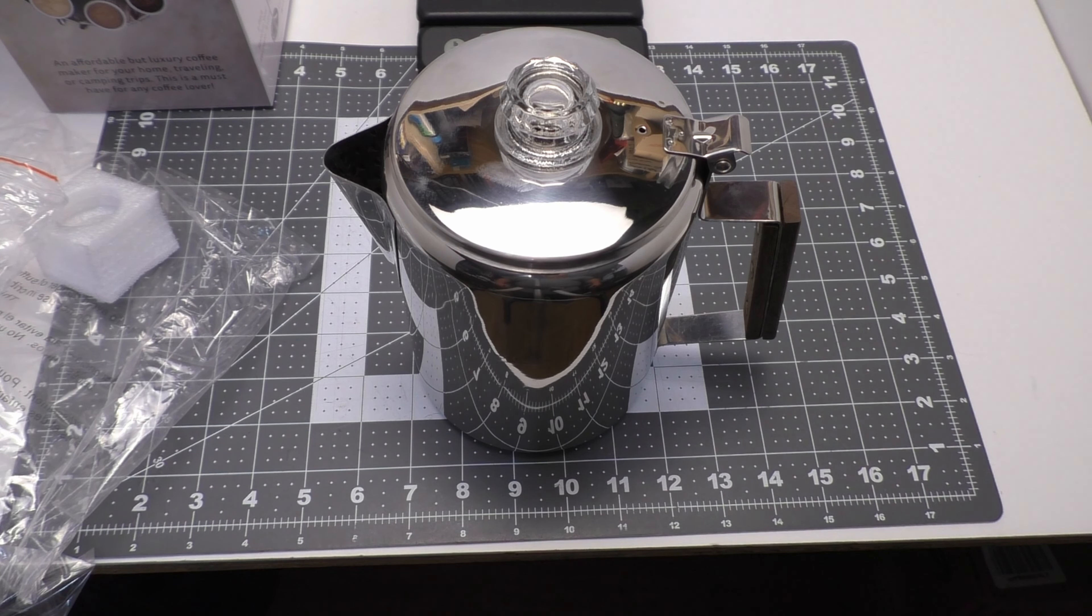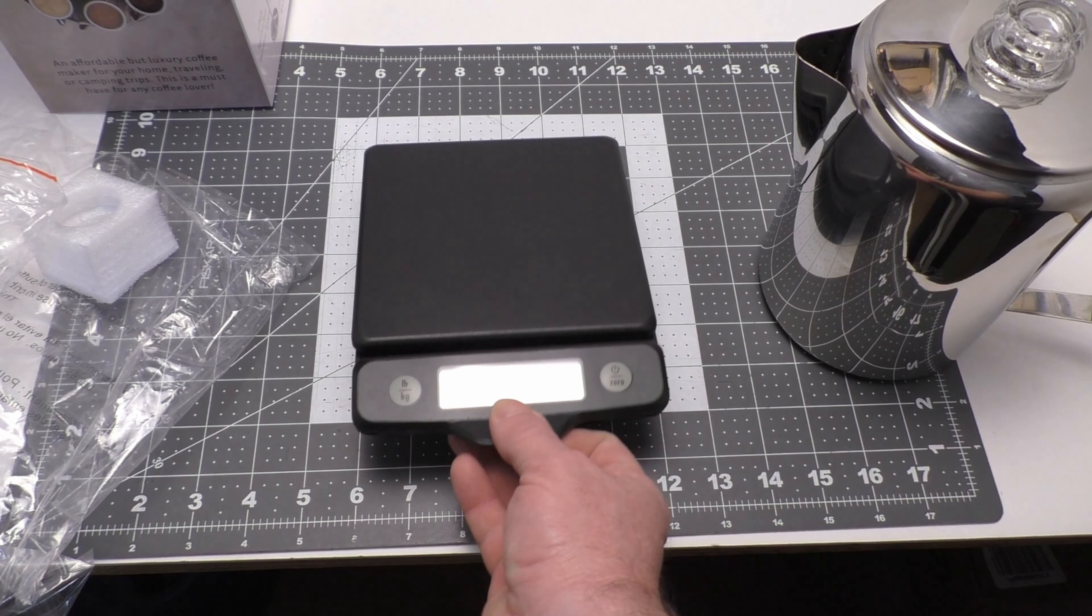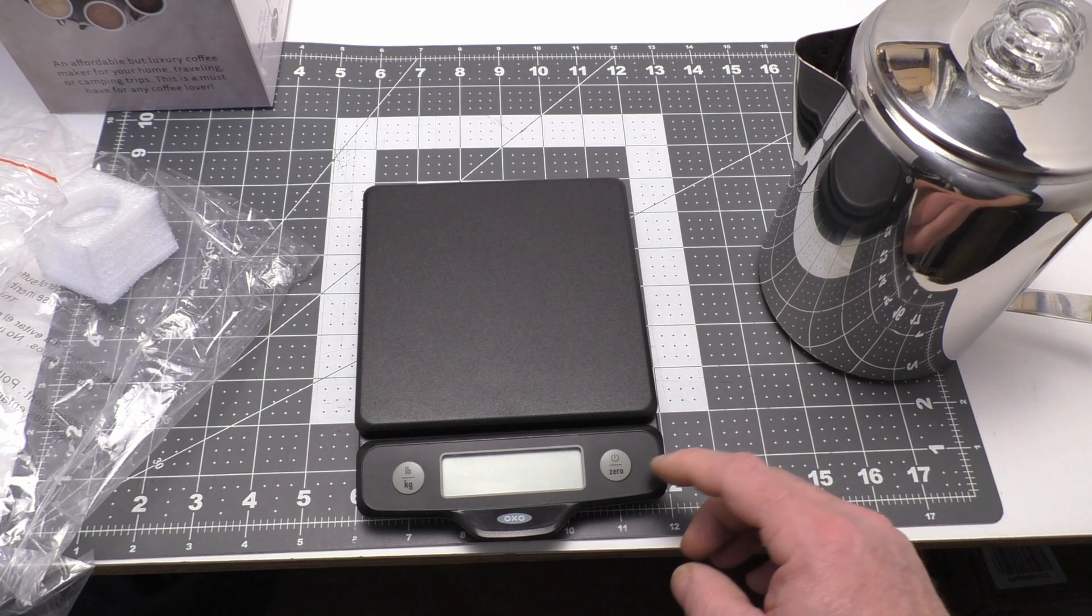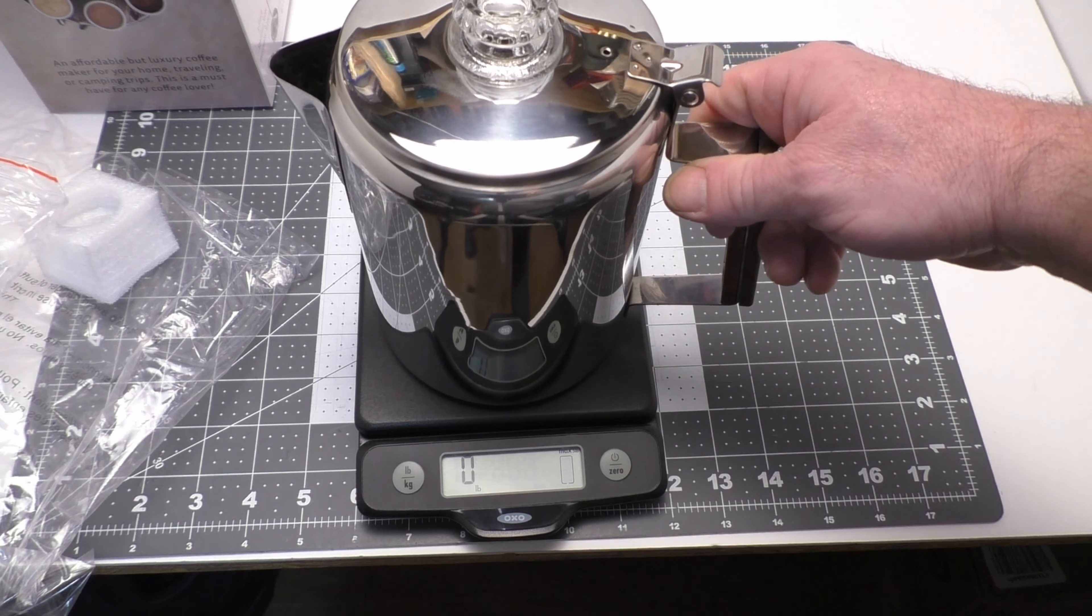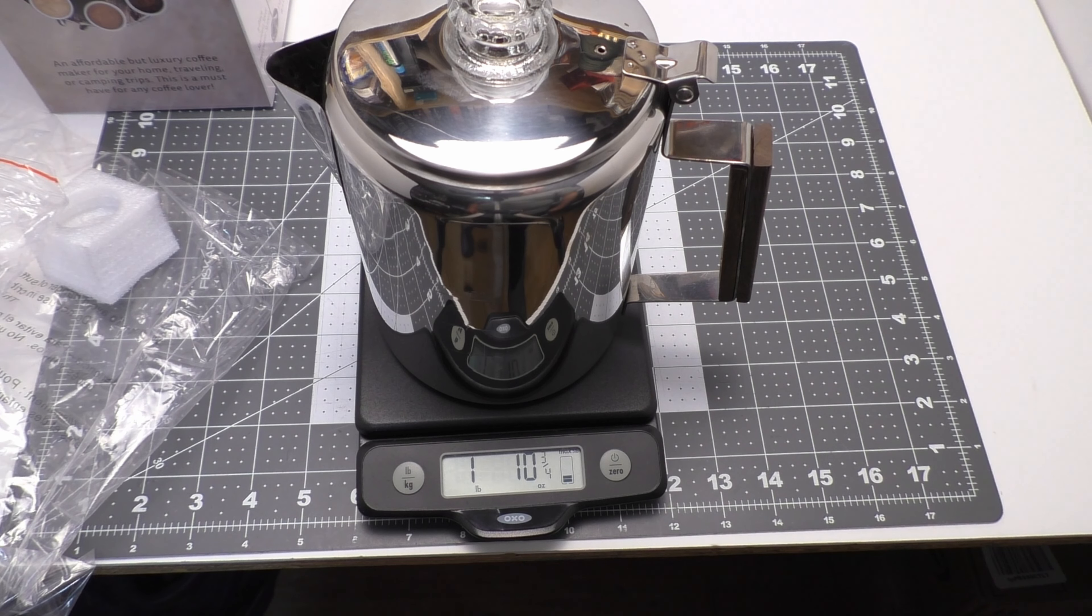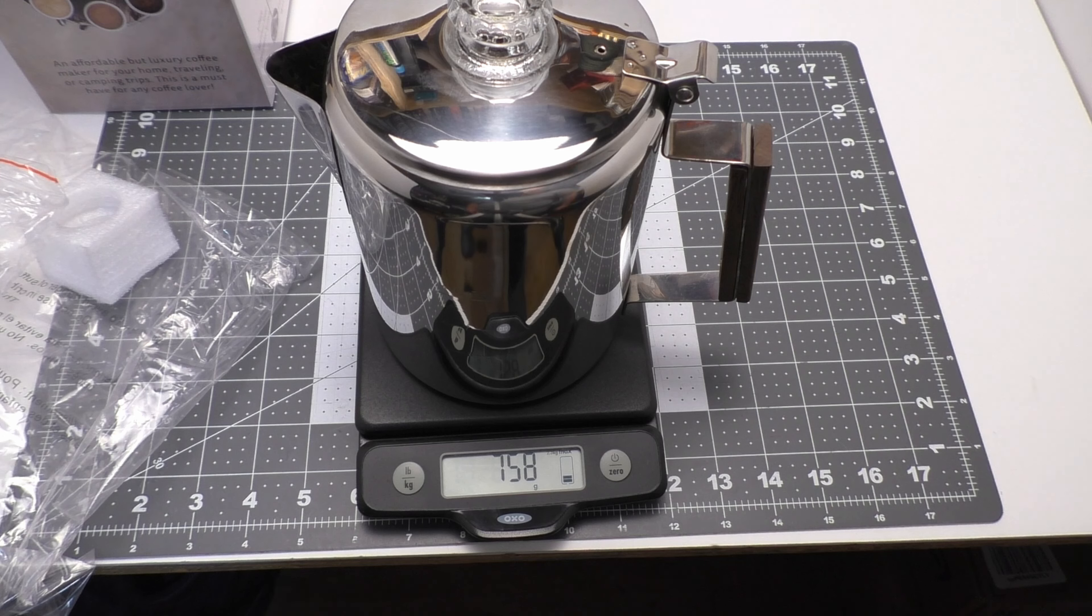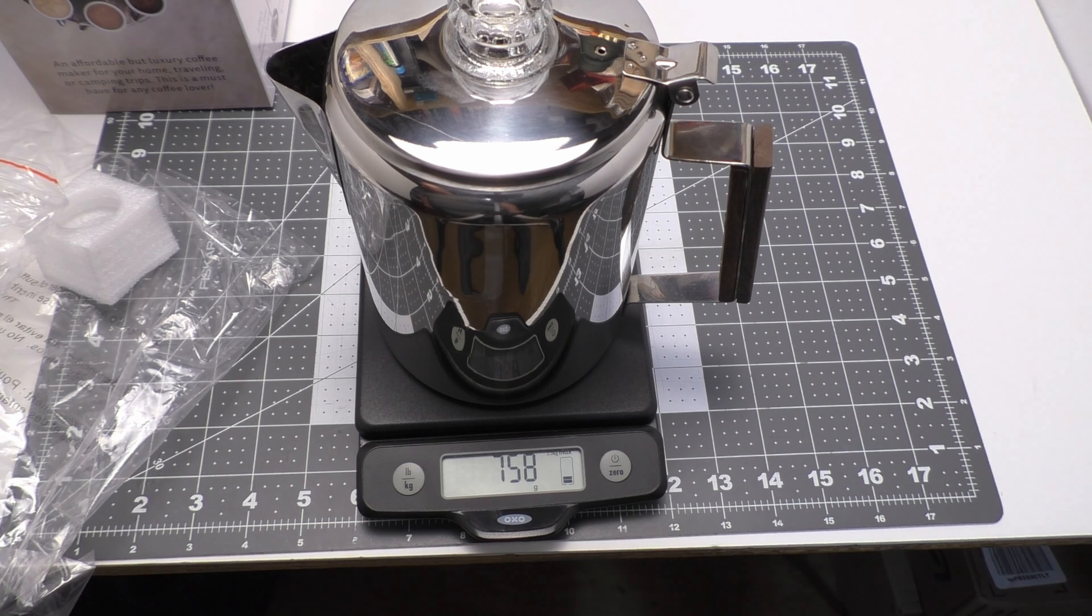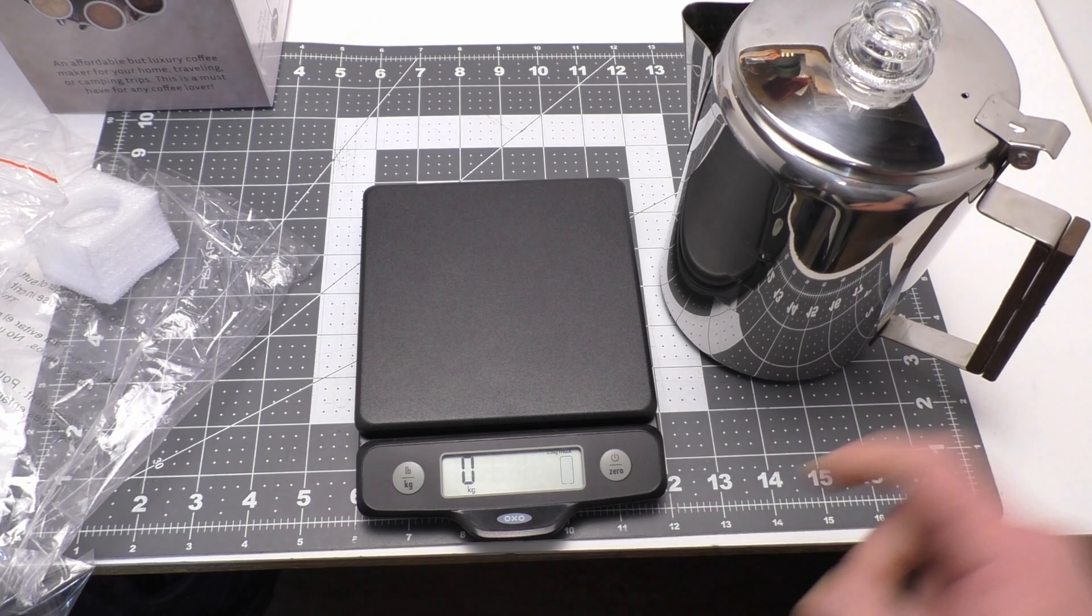Well, let's check the weight and then we gotta make some coffee cause I need my morning coffee. I'm not doing well without it. So, 1 pound and 10 and 3 quarter ounces, or 758 grams. That is actually under the list weight, I like that. So the only thing left to do...